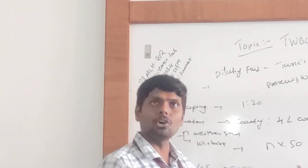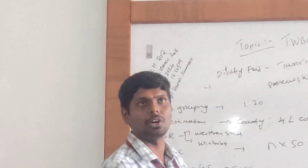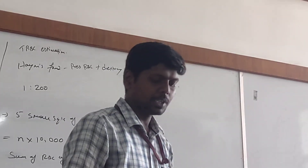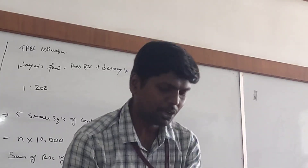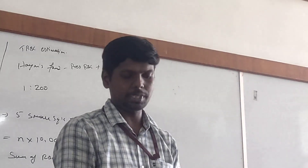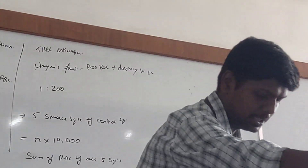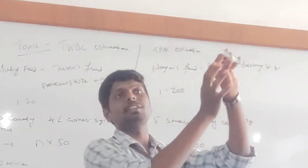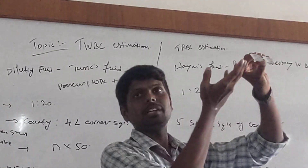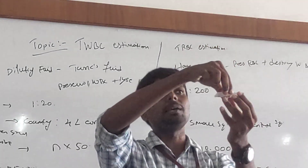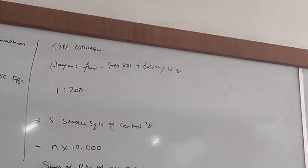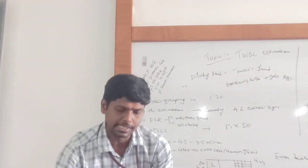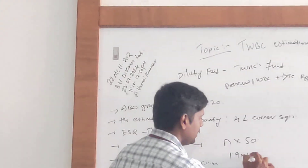Be cautious from the beginning whether you are doing the test properly. Take the Neubauer chamber, keep the coverslip — ensure it is clean with no dust or grease marks. For macrodilution for WBC, the dilution goes like this: take 1.9 ml of Turk's fluid.